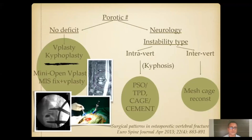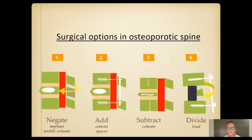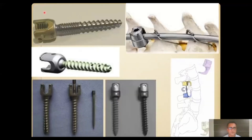The core principle is to reconstruct the anterior column and augment it with fixation devices wherever possible. The anterior reconstruction might range from just a vertebroplasty or kyphoplasty to a column-shortening osteotomy or mesh reconstruction.